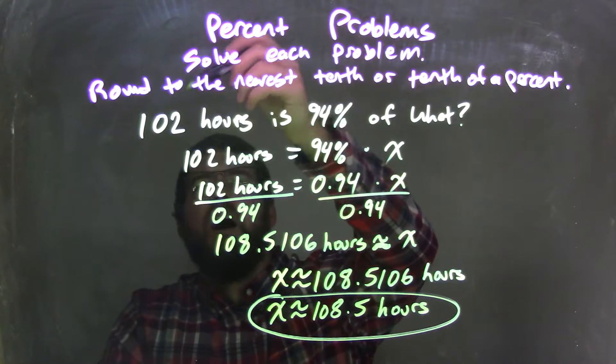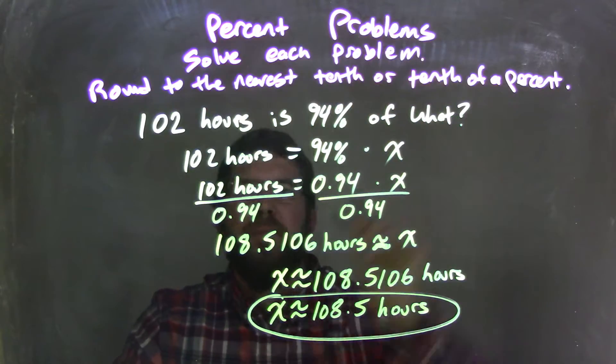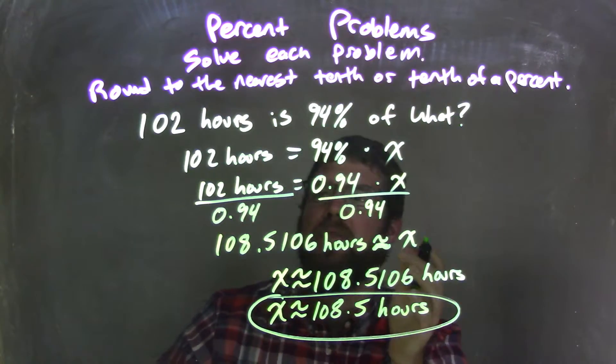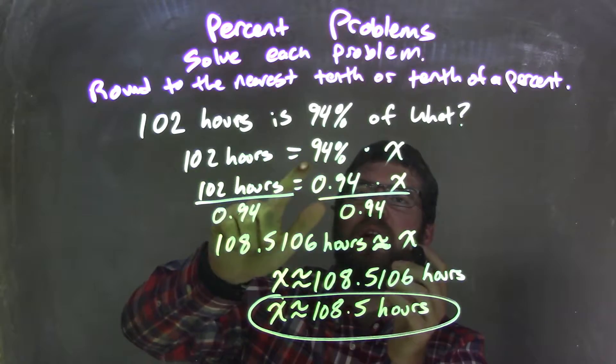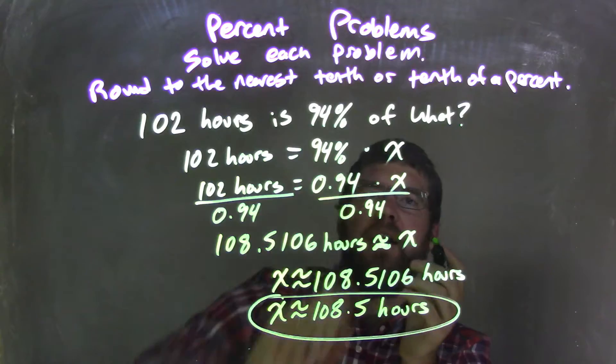We're given 102 hours is 94% of what? We have to answer that. So I rewrite that as an equation: 102 hours equals 94% of multiplication of X.